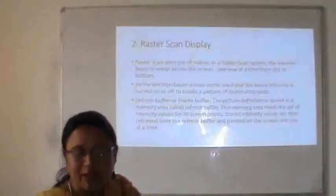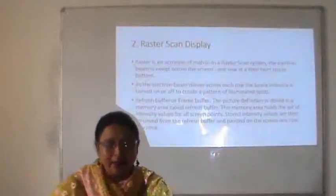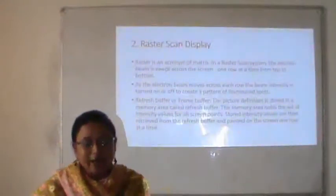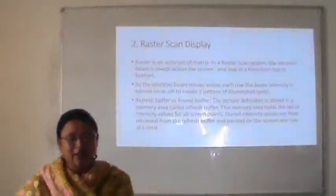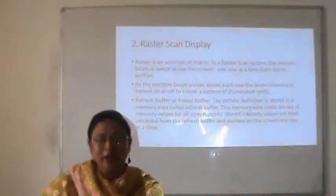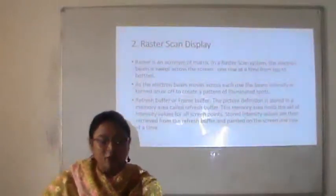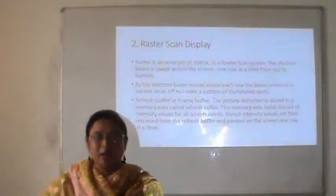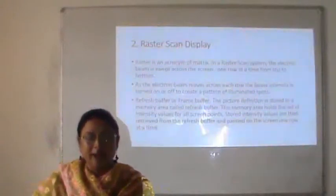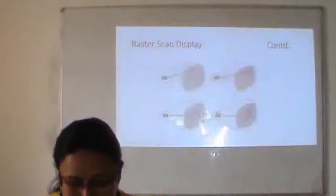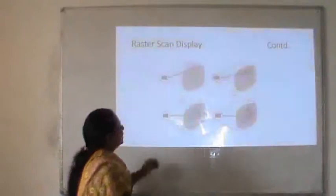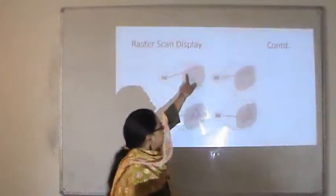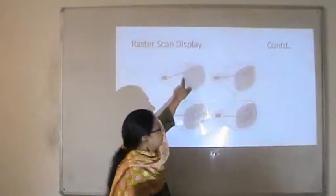The second system is raster scan display. In a raster scan system, the electron beam is swept across the screen one row at a time from top to bottom. As the electron beam moves across each row, the beam intensity is turned on or off to create a pattern of illuminated spots. The picture definition is stored in a memory area called the refresh buffer or frame buffer, which holds a set of intensity values for all screen points. Stored intensity values are then retrieved from the refresh buffer and painted onto the screen one row at a time. The electron beam goes line by line, row by row, scanning from left to right.